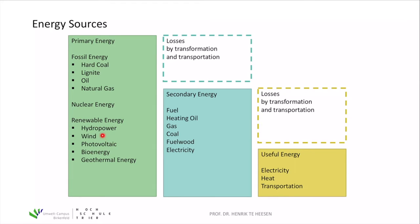Photovoltaics clearly uses sunlight to generate electricity, but wind is also driven by the sun — heating the atmosphere at Earth's surface drives air movement. Hydropower relies on water driven by the solar cycle, and bioenergy from plant growth is based on photosynthesis. Geothermal energy comes from Earth's inner core. It can be used for heating homes or, when drawn from deep layers, to generate electricity in a geothermal power plant.